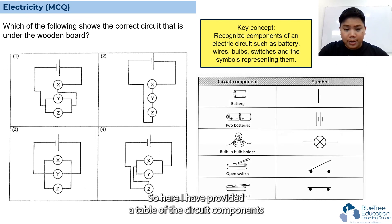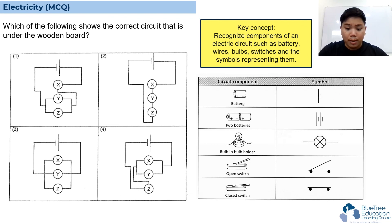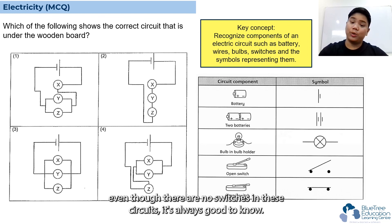Here I've provided a table of the circuit components and the symbols that represent them. You can see batteries, bulbs in bulb holders, and switches. Even though there are no switches in these circuits, it's always good to know.